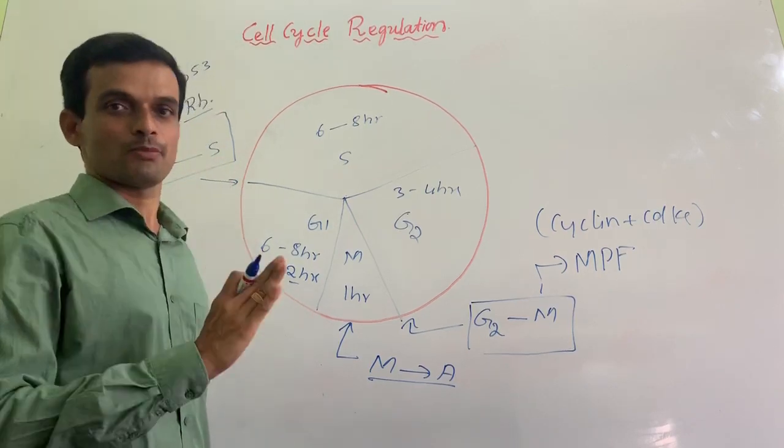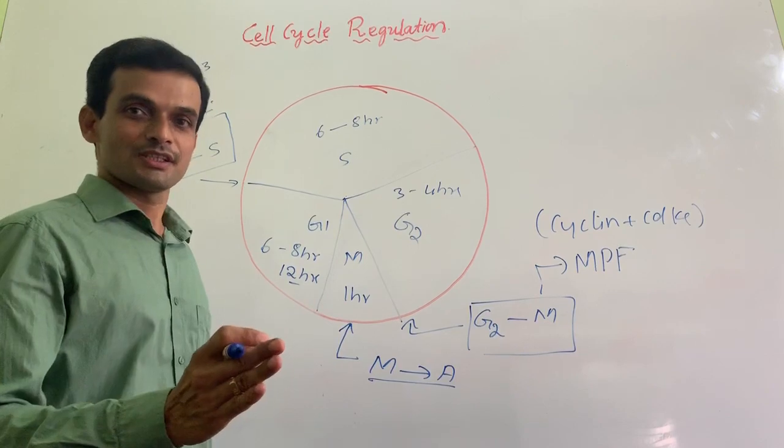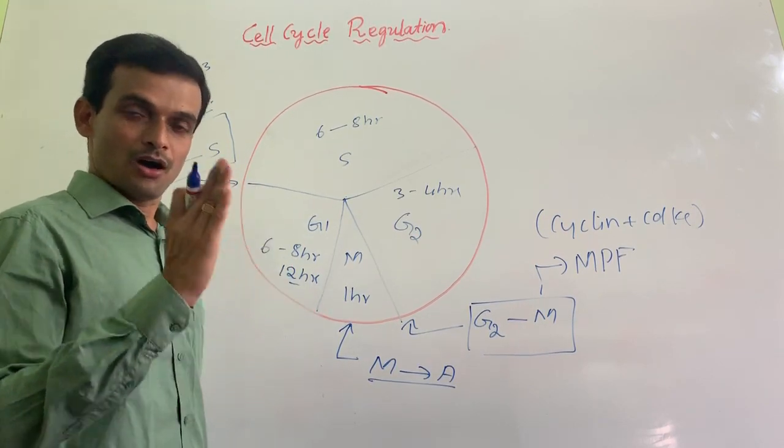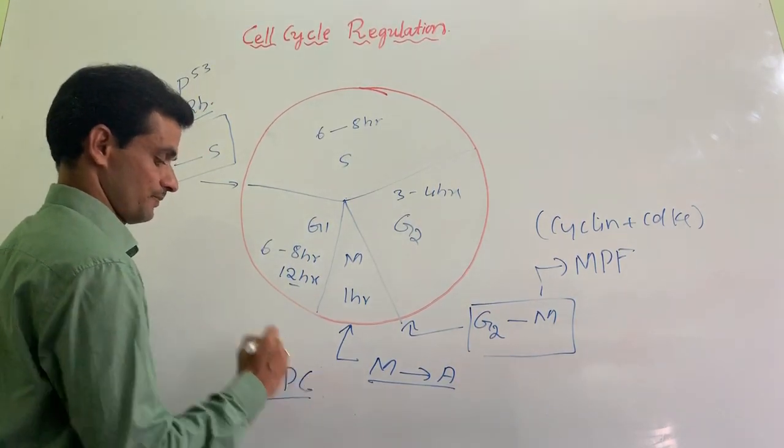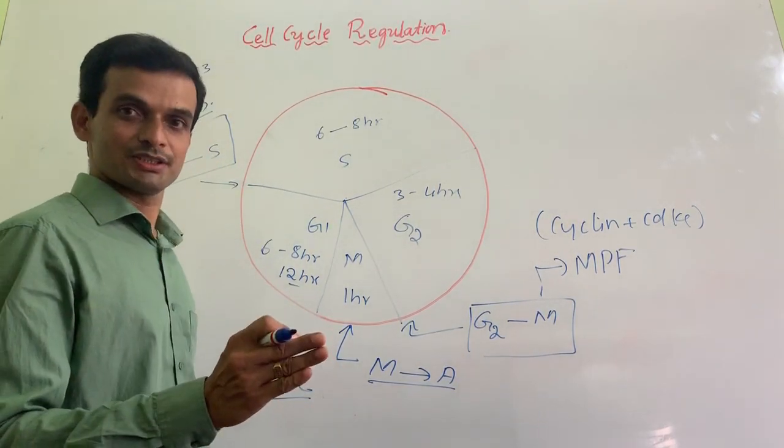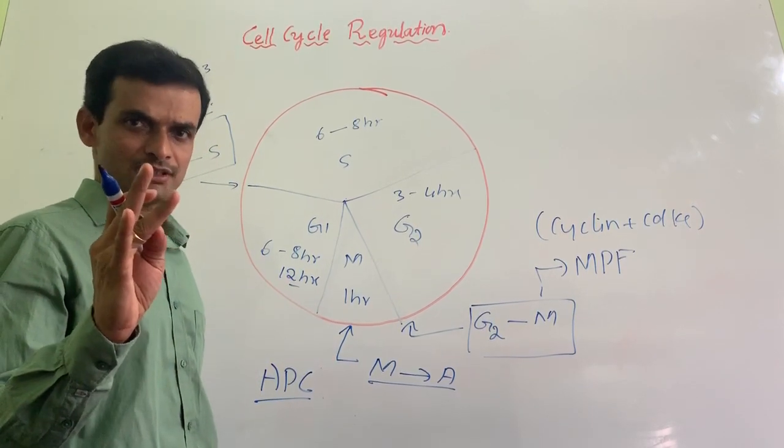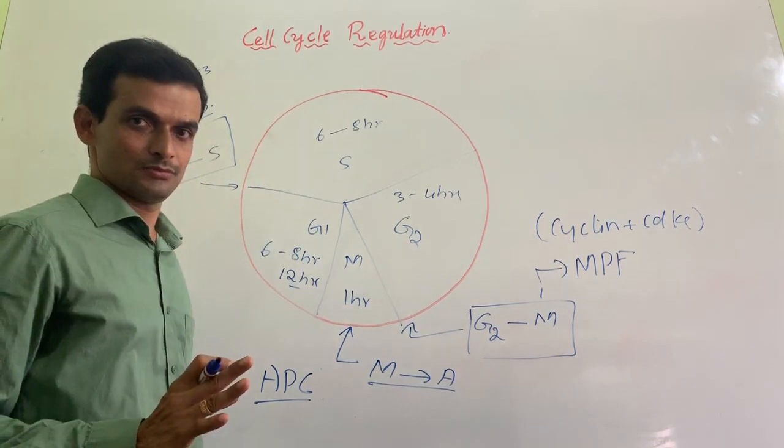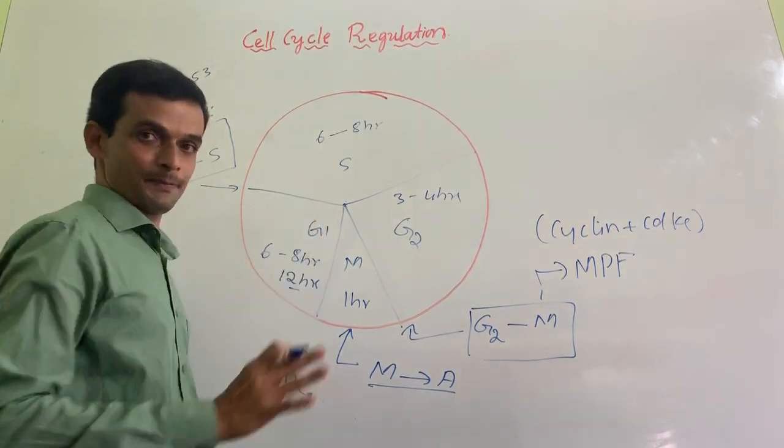If that is not proper, the cell will not go to anaphase. It means the spindle assembly complex or anaphase promoting complex will make sure that separation of the chromosomes or separation of chromatids, that depends on the type of cell division, would become normal. It means 23 on one side, 23 on the other side. There cannot be like plus or minus one.